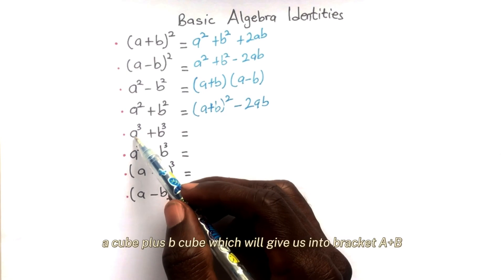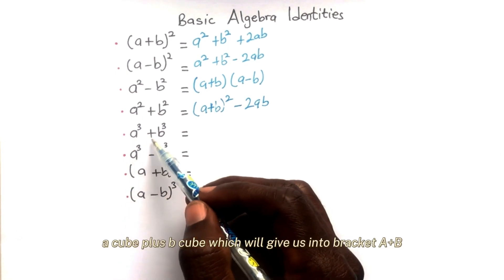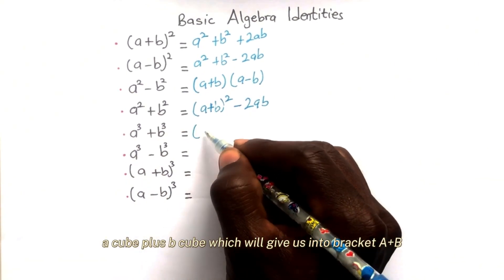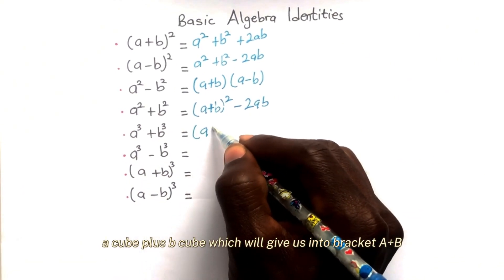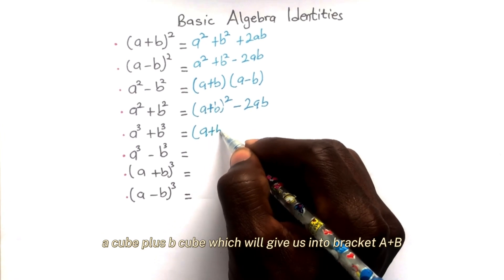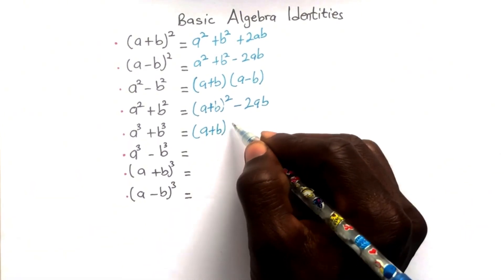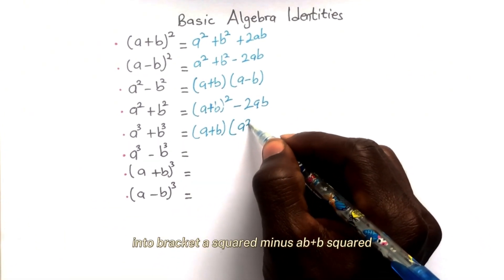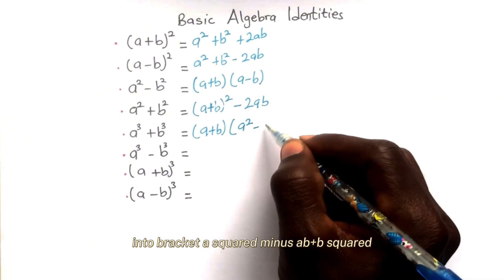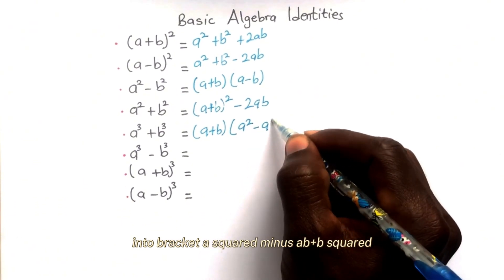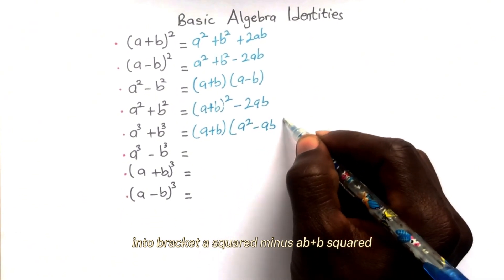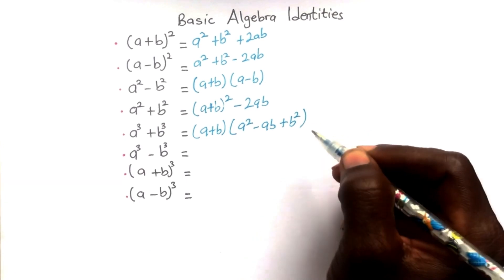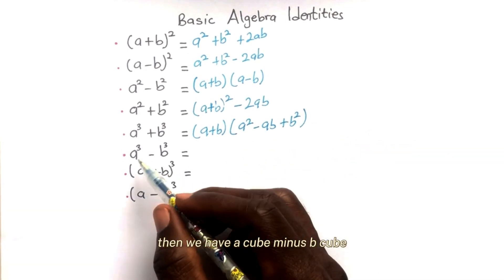a cubed plus b cubed will give us (a plus b) into (a squared minus ab plus b squared).